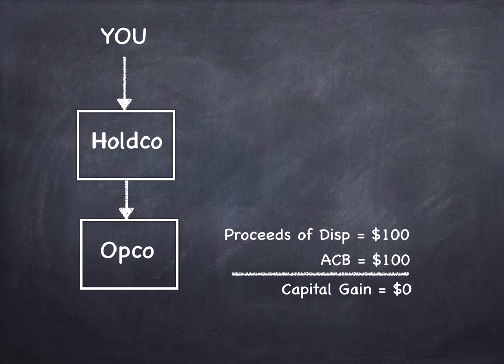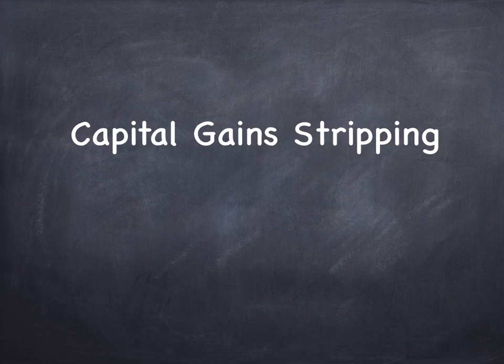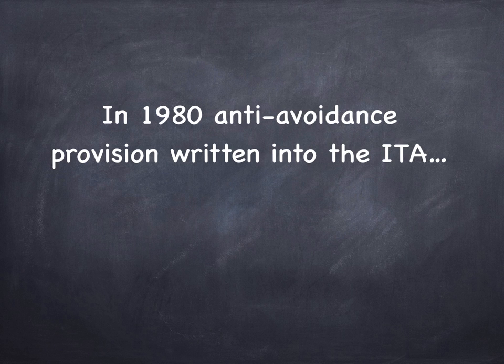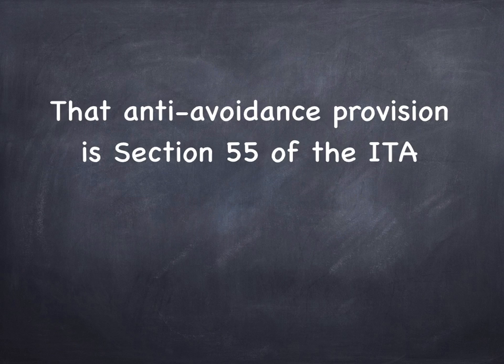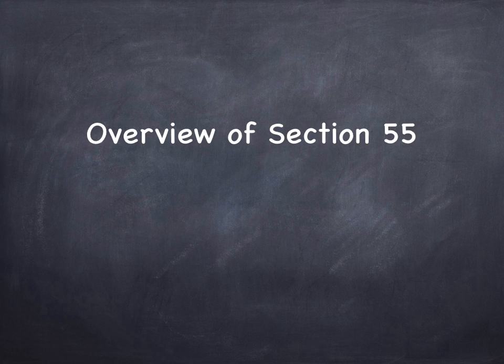That is an example of capital gain stripping. And in 1980, an anti-avoidance provision was written into the Income Tax Act to basically shut down capital gain stripping. That anti-avoidance provision is Section 55 of the Income Tax Act. It's a pretty important part of the Act. It's very complicated — at least it was. Now it's even more complicated.